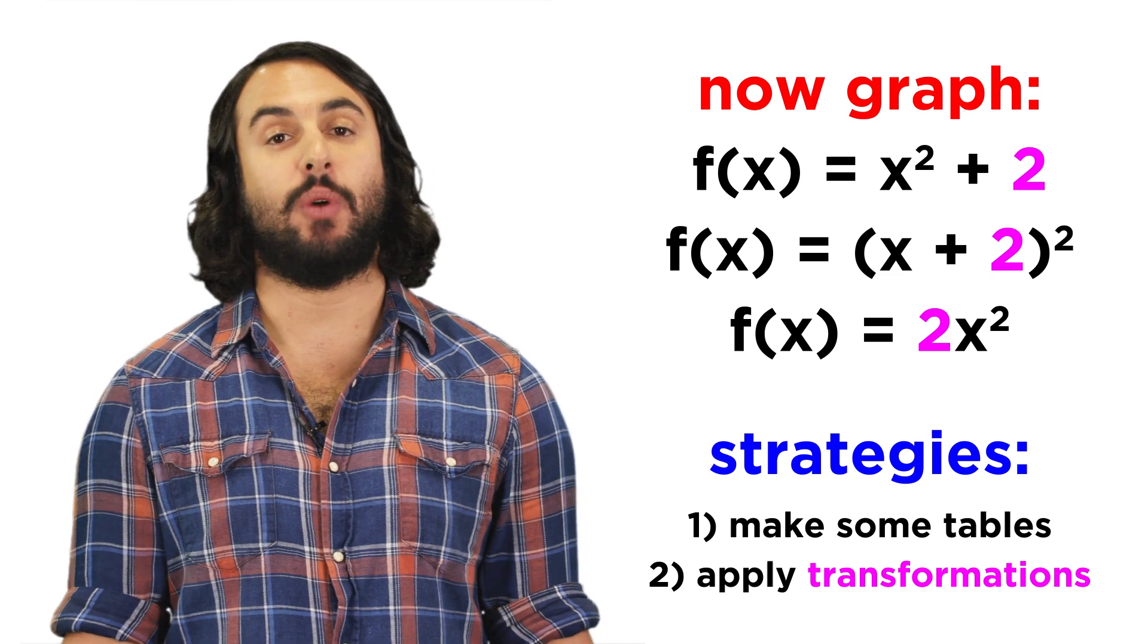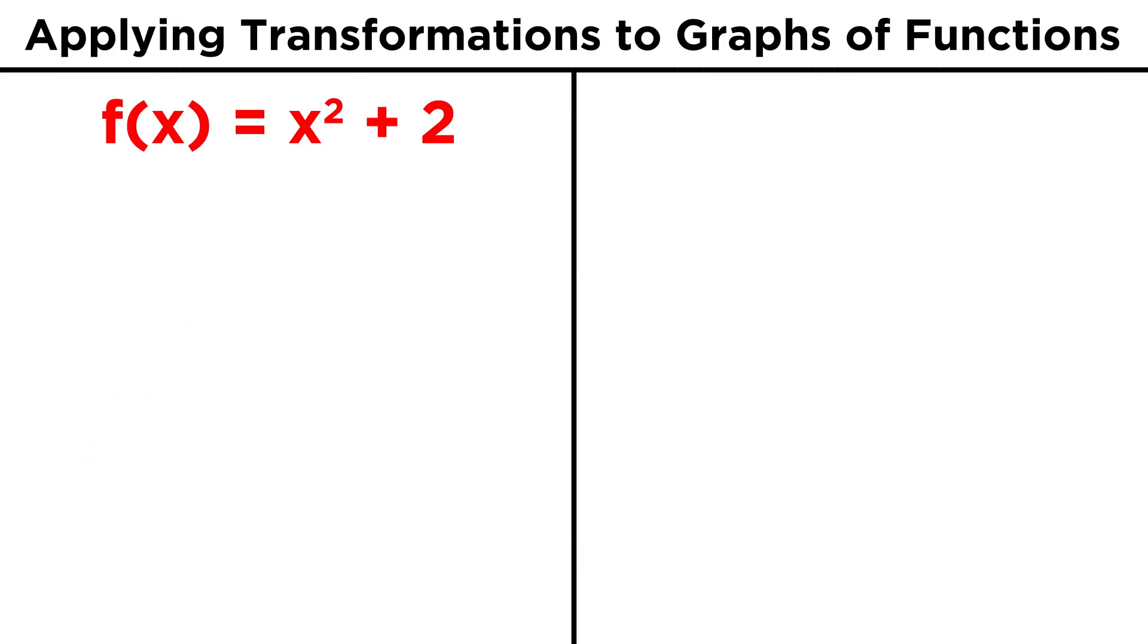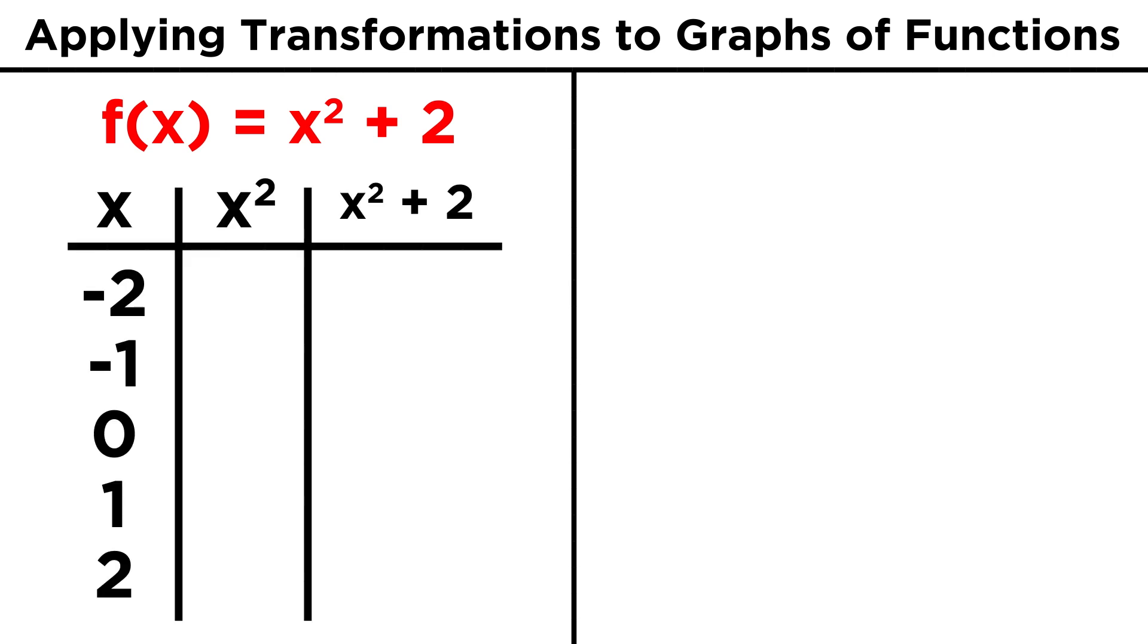Let's make some tables, and I'll show you what I mean. Take the first example, x squared plus two. Let's plug in the values we would typically use when evaluating x squared, and we can see that in each case, we simply add two to what we would have gotten normally.